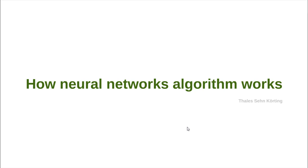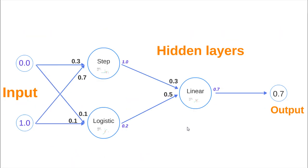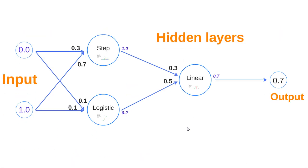I will explain very briefly how neural networks work. Here we show a simple neural network, where on the left we have the input, on the right we have the output, and in the middle these three circles represent the neurons.